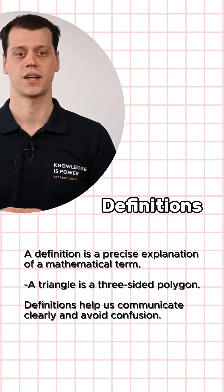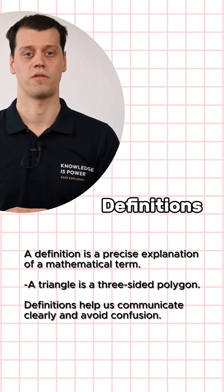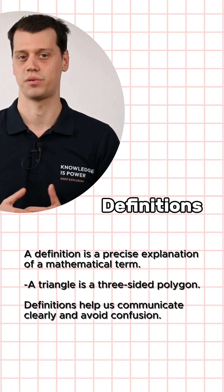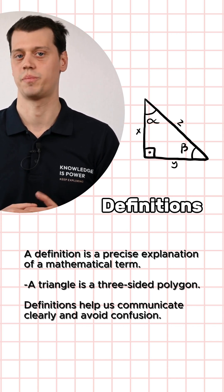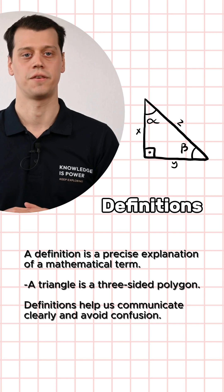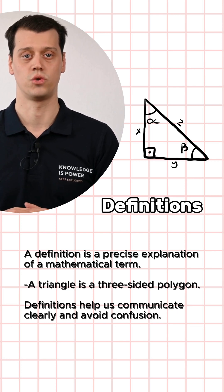A definition is a precise explanation of a mathematical term. For example, a triangle is a three-sided polygon. Definitions help us communicate clearly and avoid confusion.